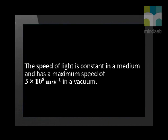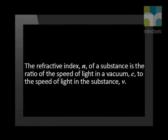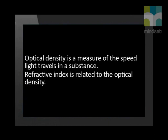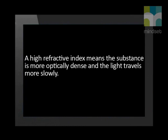So in this lesson we have learnt about the refractive index. Let us briefly summarize the main points. The speed of light is constant in a medium and has a maximum speed of 3 × 10⁸ meters per second in a vacuum. The refractive index, n, of a substance is the ratio of the speed of light in a vacuum, c, to the speed of light in the substance, v — that means n = c ÷ v. Optical density is a measure of the speed light travels in a substance, and the refractive index is related to the optical density. A high refractive index means the substance is more optically dense and the light travels more slowly.